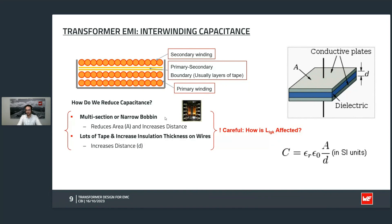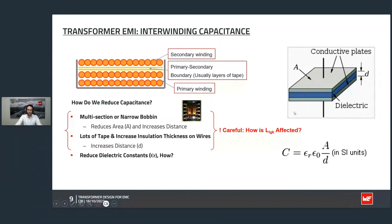We have one additional tool: the dielectric constant — epsilon zero and epsilon r. The dielectric constant will not affect the leakage inductance since it is not a magnetic property, it is a dielectric property. The material between primary and secondary has a certain dielectric constant — if we reduce it we can also reduce the capacitance without affecting the leakage inductance. So we can use varnishes or potting compounds with low dielectric properties, or sometimes it is best to use nothing at all because air already has a dielectric constant of one.